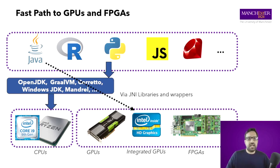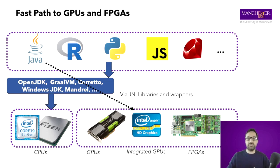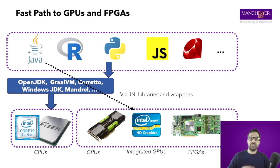The question is how to access heterogeneous hardware right now. At the bottom are different hardware types: CPUs, GPUs, FPGAs, etc. At the top level are different high-level programming languages. For this presentation, we'll stay with Java, but a similar situation applies to other languages. Java executes on top of a virtual machine — OpenJDK is one implementation, but also GraalVM, Corretto, and JDK all work in a similar way. Your application is translated from Java source code to bytecode, and then the VM executes the bytecode.